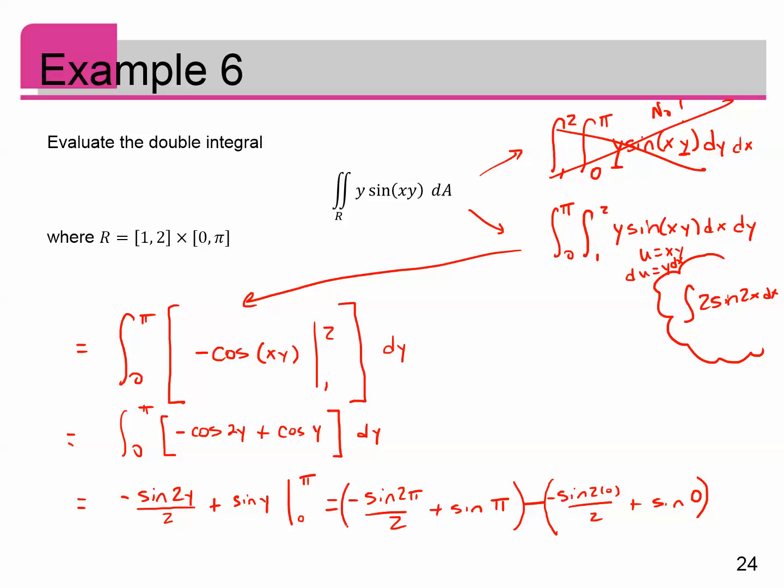All right, plugging in my top and my bottom limit. Sine of 2 pi is 0. Sine of pi is 0. Sine of 0 is 0. Sine of 0 is 0. So the double integral there is 0.